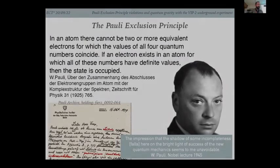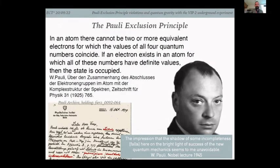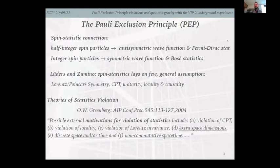Despite the success, in his Nobel lecture in 1945, Pauli said that he had the impression that the shadow of some incompleteness was falling on the bright light of the success of the new quantum mechanics.